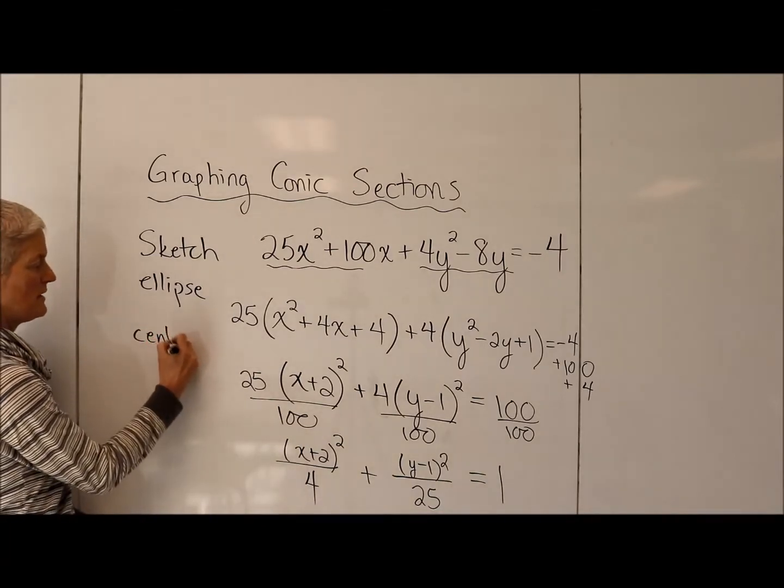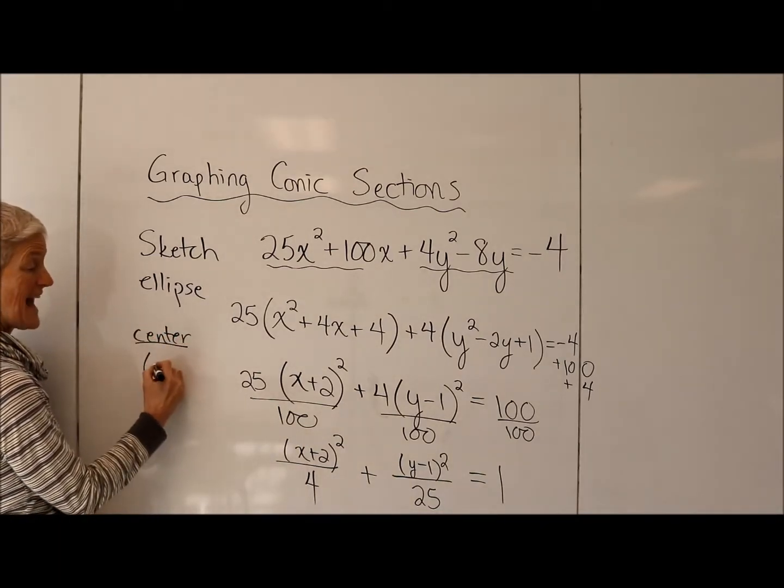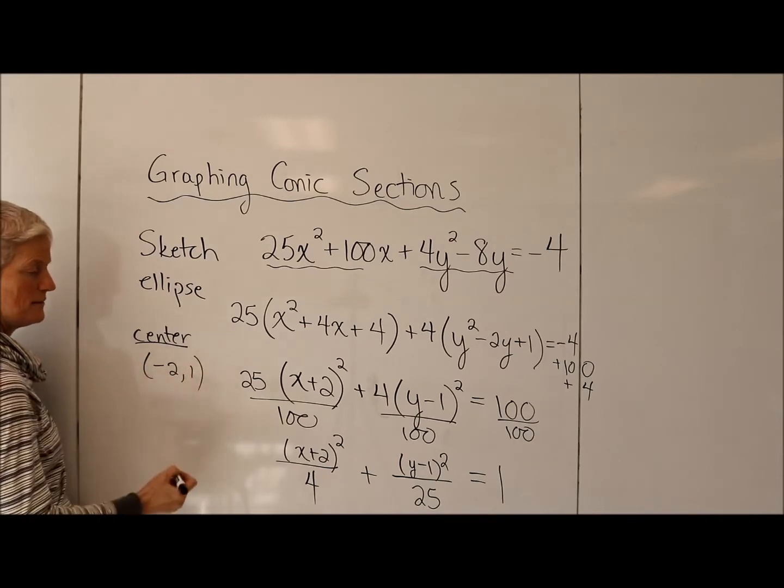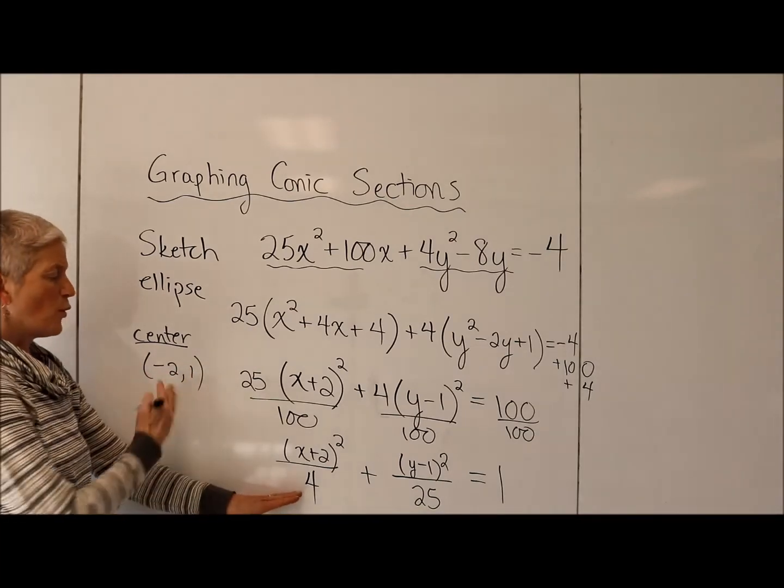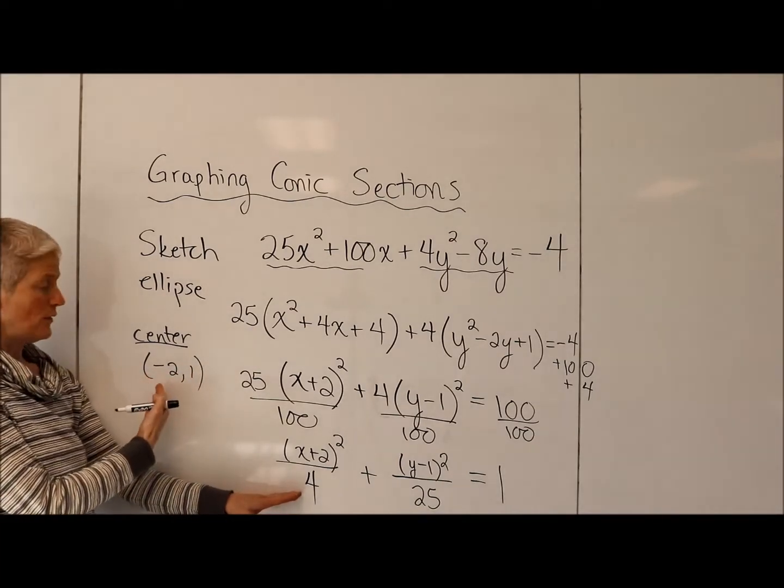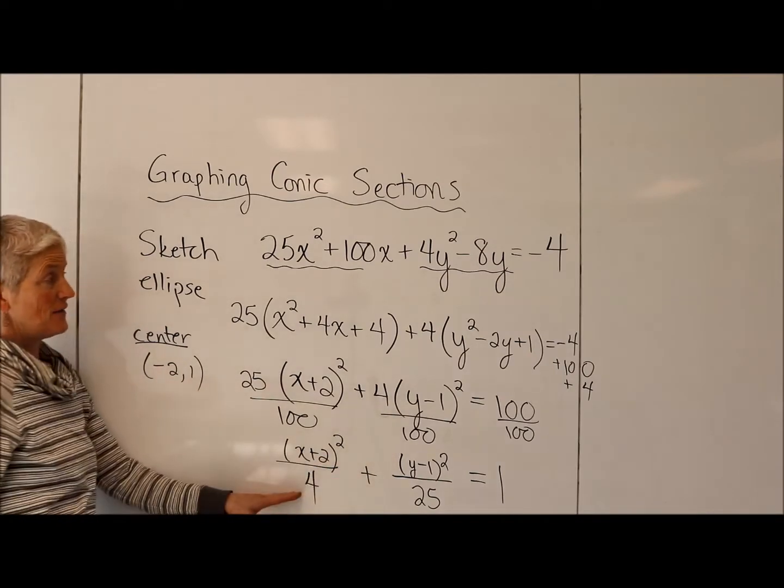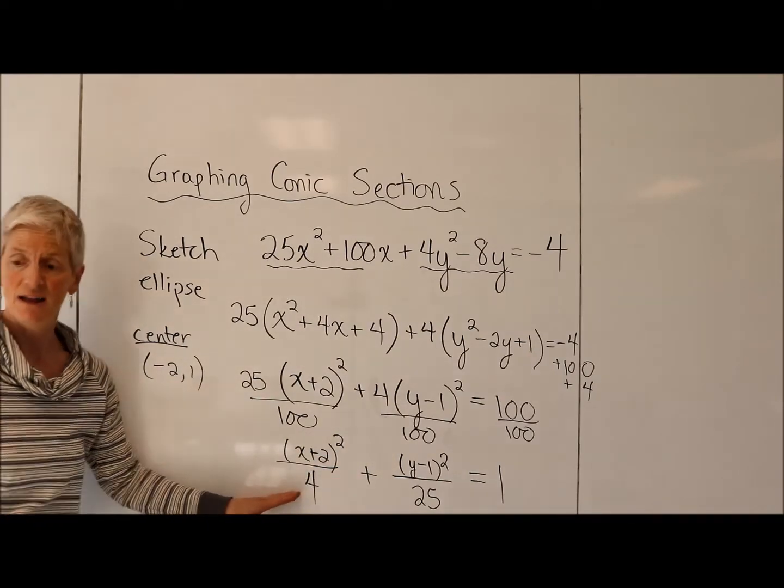So the center of my ellipse is going to be at negative 2, 1. I'm going to go right and left 2, up and down 5, and create my ellipse.